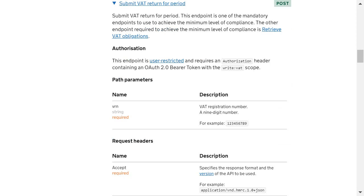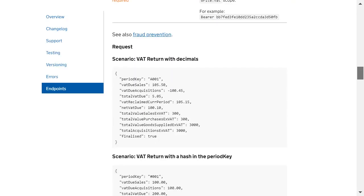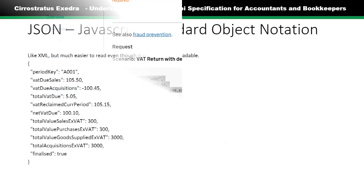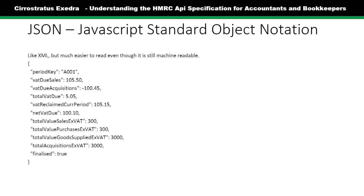Looking at submitting a VAT return, you see all of this stuff, and in the middle of it you have what's known as JSON — JavaScript Standard Object Notation. It's a way of sending information so that it's machine readable, that is, the computer can understand it without a human being working out what it means. You can see here this is the information that's sent in the VAT return.